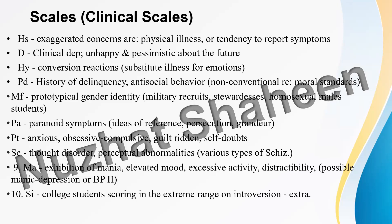The Psychasthenia (PT) scale measures the similarity of the subject to psychiatric patients who are troubled by phobias or compulsive behaviors. The compulsive behaviors may be explicit or implicit — such as obsessive thoughts that cannot be dismissed, obsessive thinking, and all types of unreasonable or intense fears (phobias).